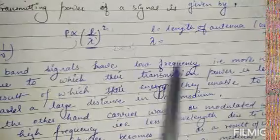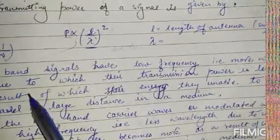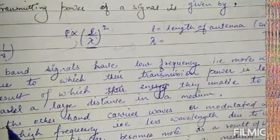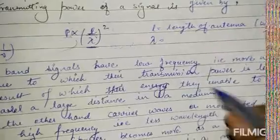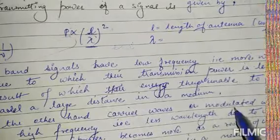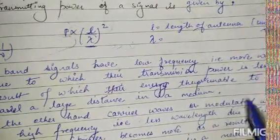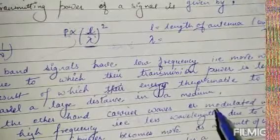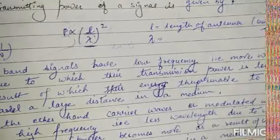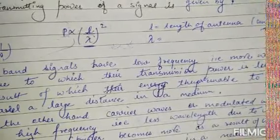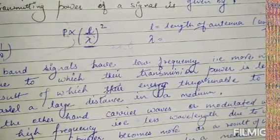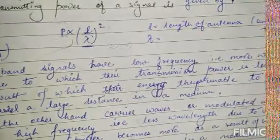Baseband signals have low frequency, that is more wavelength, due to which their transmission power is less. As a result, they are unable to travel a large distance in a medium. On the other hand, the carrier wave and the modulated wave have high frequency and less wavelength, due to which their transmission power is more, and as a result they can travel a large distance in a medium.